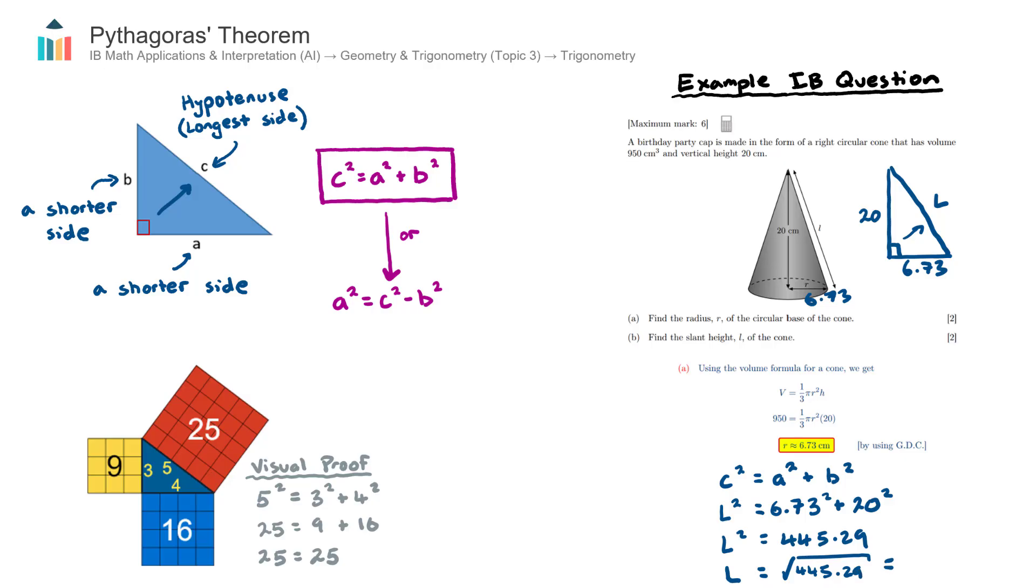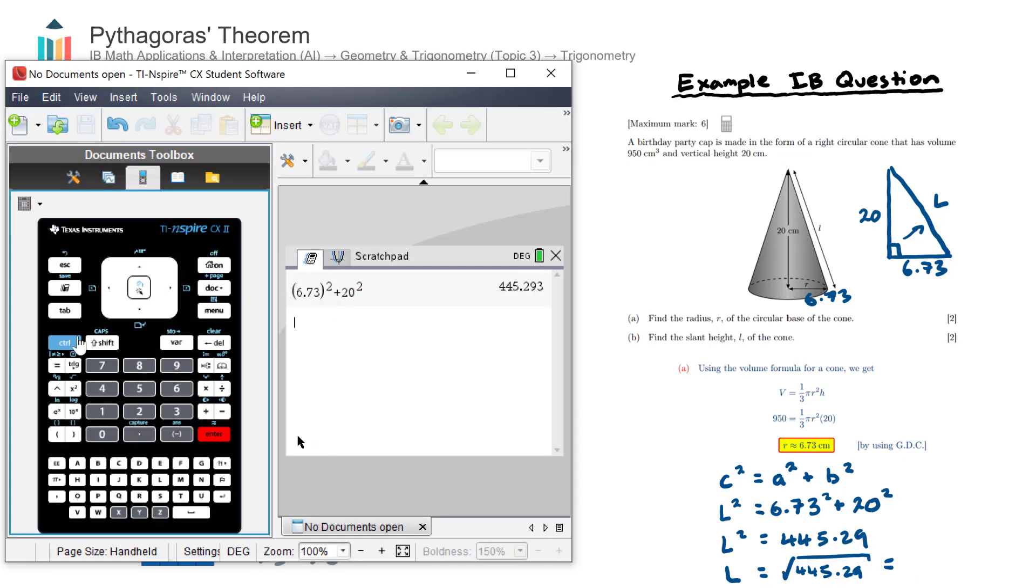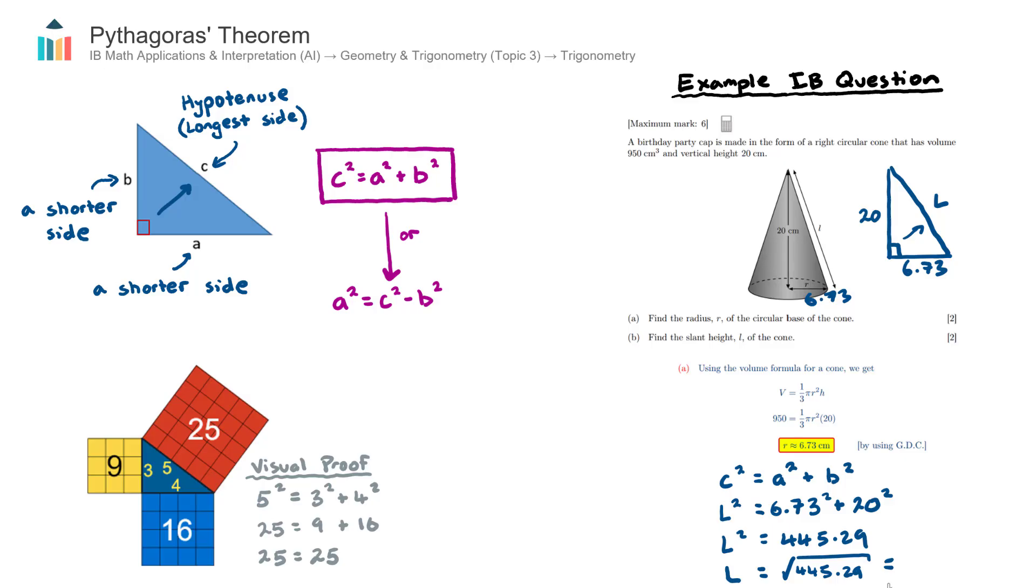And that is equal to, let's just use our calculator from there. So we go square root of the answer above. And that is 21.1. And that looks more like it. So that is equal to 21.1. And this is in centimeters. Okay, that's an example question there.